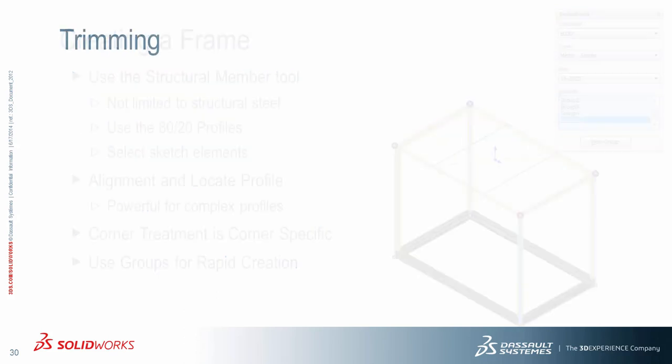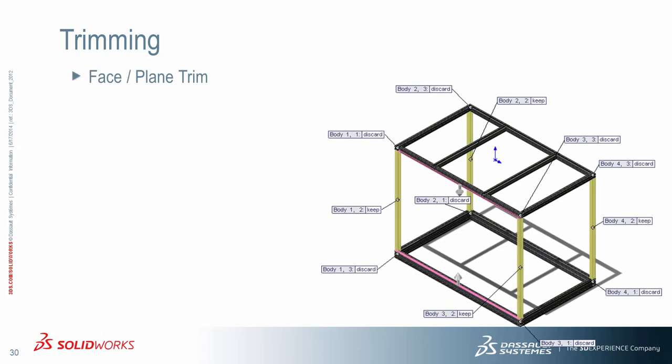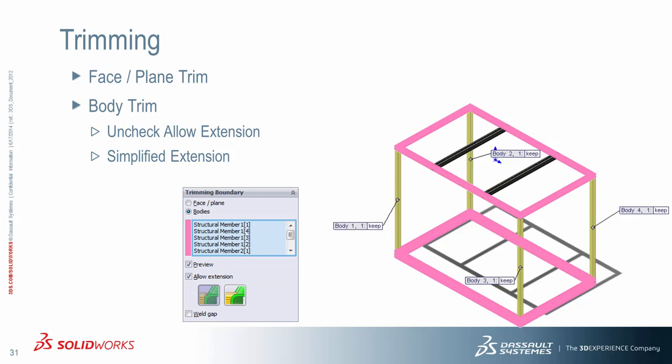Now let's get into trimming aluminum extruded frames. When you trim, there are two ways of doing it. The first is using Face or Plane Trim — you select any plane or face as a trimming tool, but then you have to choose which geometry to keep and which to discard, which can get cumbersome. The other method is Body Trim, where you choose which bodies to trim with and what to keep or remove. Notice the checkbox 'Allow Extension' and the icons underneath it — you'll want to uncheck this and use the simplified extension method. If you use the other method, your features may extend into those T-slots, creating undesired results.